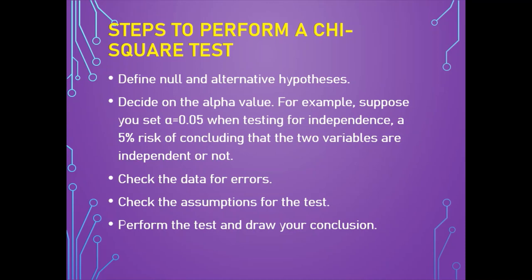For both chi-square tests, the analysis steps are: first, define the null and alternative hypothesis before collecting data; second, decide on the alpha value (p-value), for example setting alpha = 0.05 means accepting a 5% risk of drawing the wrong conclusion; third, check the data for errors; fourth, check assumptions for the test; and finally, perform the test and draw conclusions. The test statistic involves finding the squared differences between actual and expected data values, dividing by expected values, then comparing to a theoretical value from the chi-square distribution table.